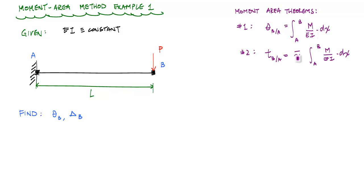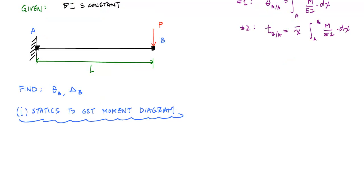What we're going to do here is find the slope and deflection at point B. The first thing we want to do is really do a bunch of static stuff, which is enough to generate the moment diagram and then the curvature diagram. From equilibrium equations, I know that I have a vertical reaction at A with a magnitude P, and a moment reaction at A with a magnitude P times L.